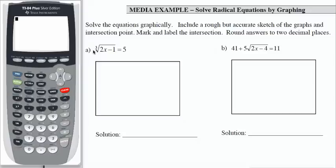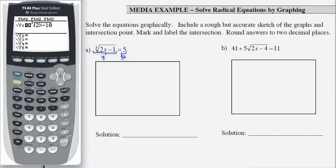So if I go into my y equals I'm going to clear out whatever is there. In this case I need a cube root function which is item 4 in the math menu. 2x minus 1 and then move my arrow to end the radical. Go down to y2 and enter 5.